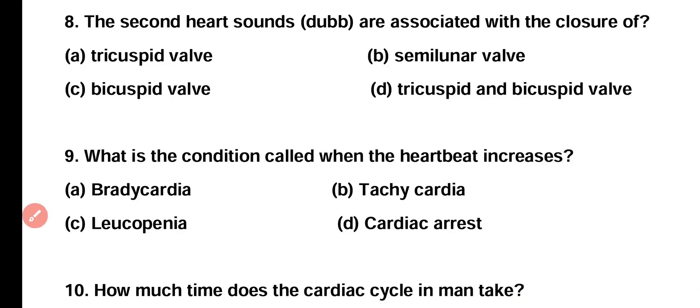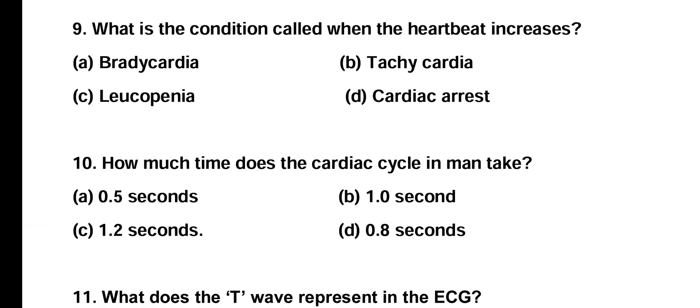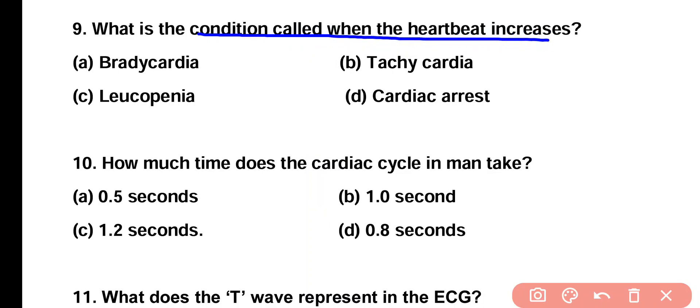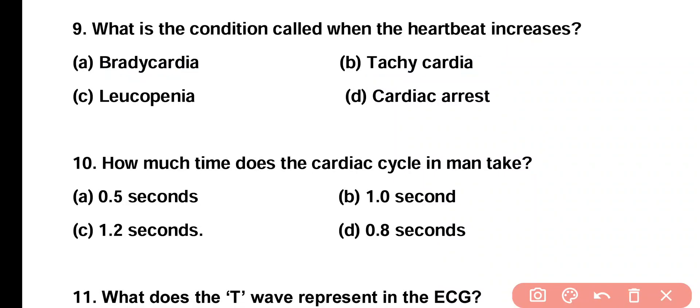Question number 9. What is the condition called when the heart beat increases? Bradycardia, tachycardia, leukopenia, or cardiac arrest? Correct answer is option B. Fast heart beating which is more than 100 beats per minute is known as tachycardia, while slow heartbeat is known as bradycardia.